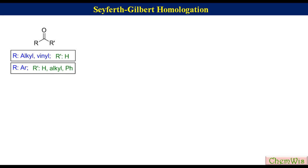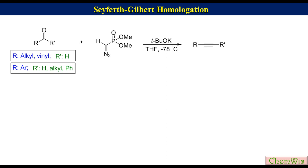Seyferth-Gilbert homologation is the reaction of an aryl ketone or an aldehyde with dimethyl diazomethyl phosphonate in the presence of a strong base like potassium t-butoxide at low temperature to produce a substituted alkyne. Dimethyl diazomethyl phosphonate is often called the Seyferth-Gilbert reagent.